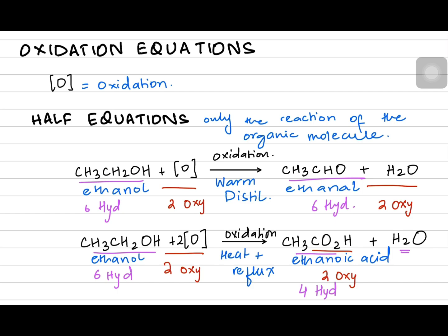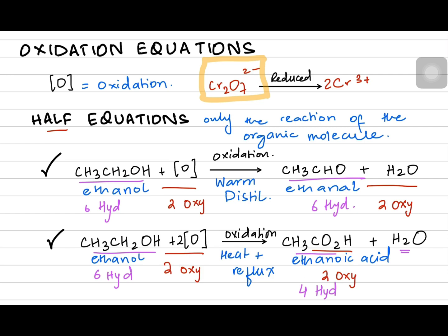These two equations are only half equations for the organic molecule. When we talk about the dichromate Cr₂O₇²⁻ as a reagent — it is also reacting, making Cr³⁺ ions. While the alcohol is oxidized, the dichromate is reduced. It was orange in color in the beginning, and now it turns green.